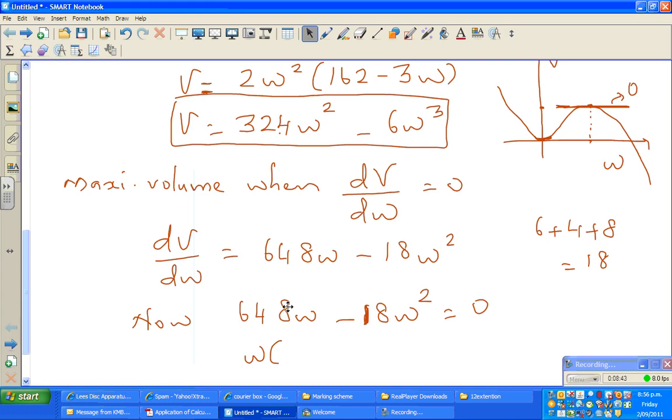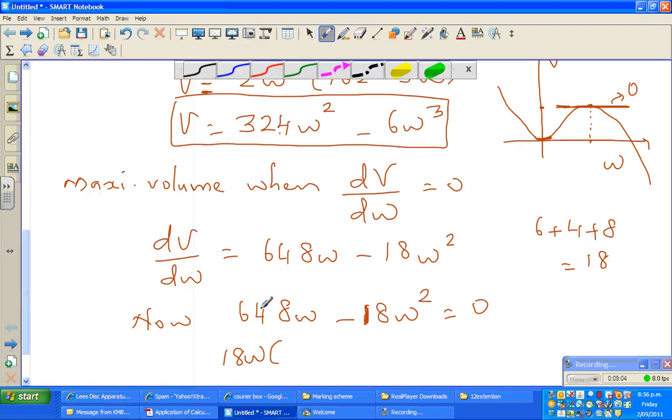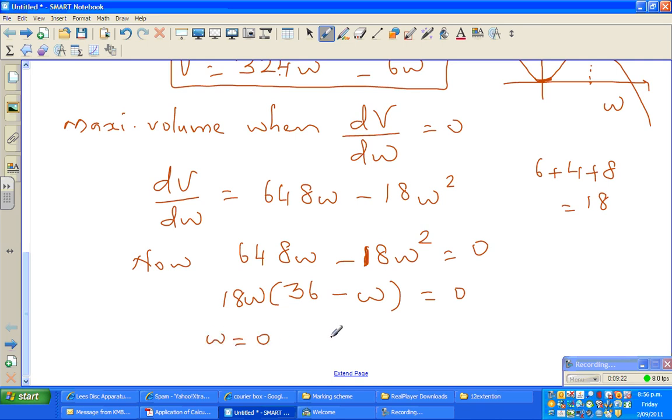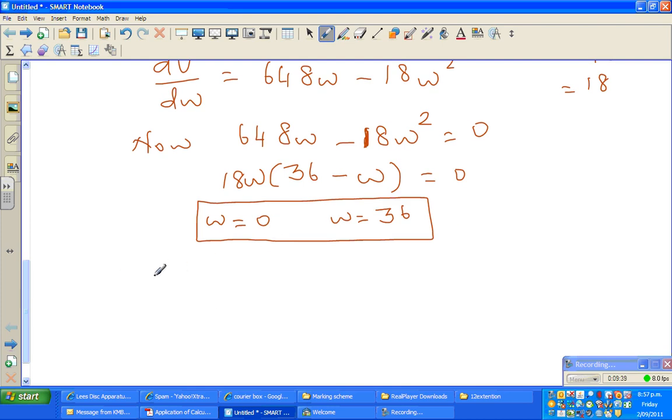648 divided by 18 is 36. So this is 18W times (36 minus W) equals 0. W has to be 0 or W equals 36. This is the maximum width that the bag or the parcel can have. W has to be greater than 0, which implies W has to be 36.